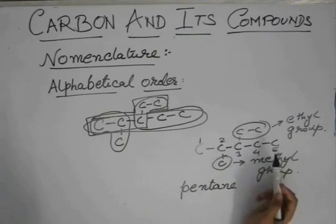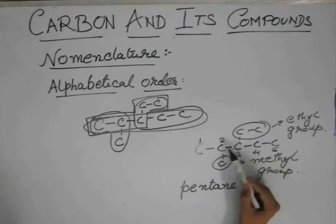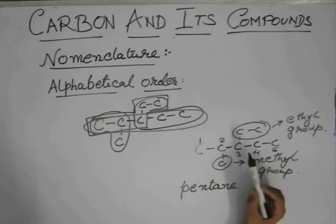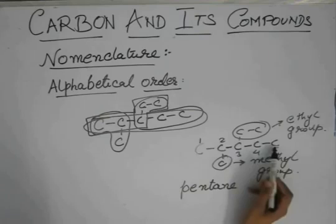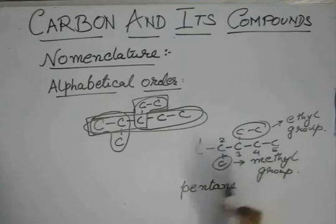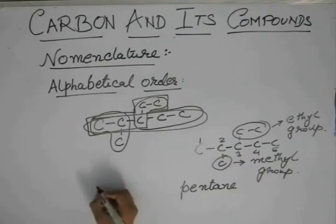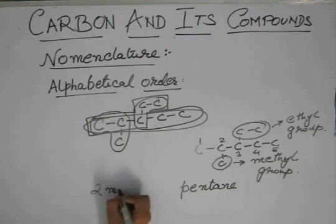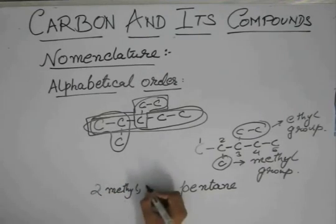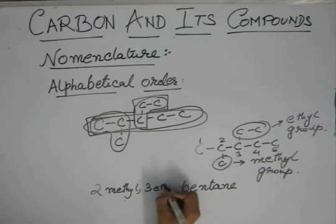And if we start counting from here, it's three and four. So it's three plus four, seven. So this should be the correct order. So it should be what? Two methyl, three ethyl pentane.